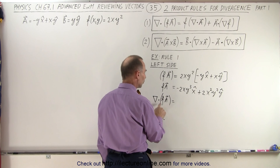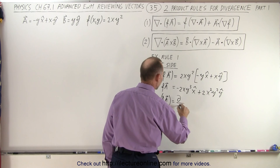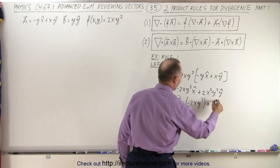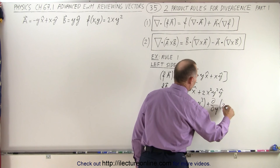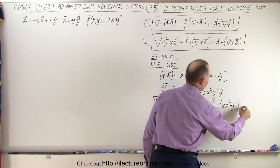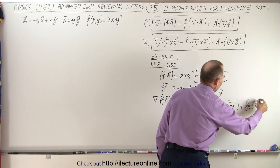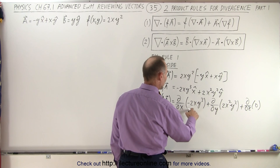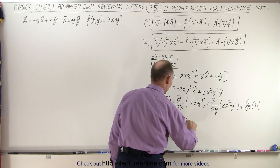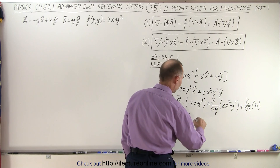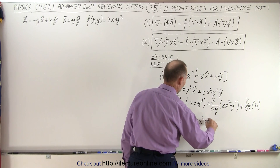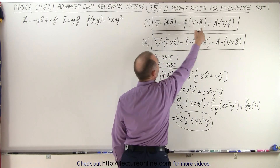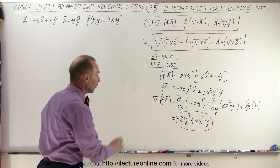Now we're going to take the divergence of that. This is going to be equal to the partial with respect to x of minus 2xy³, plus the partial with respect to y of 2x²y², and then plus the partial with respect to z — of course, there's nothing there to take the divergence of. So this is equal to minus 2y³ plus 4x²y. That's the result of the left side.